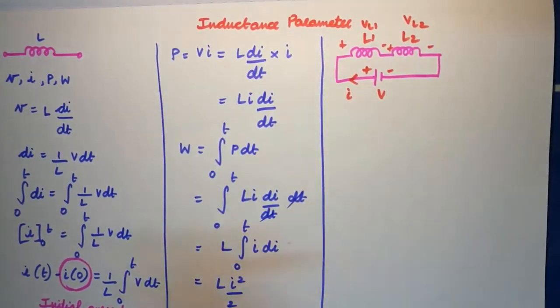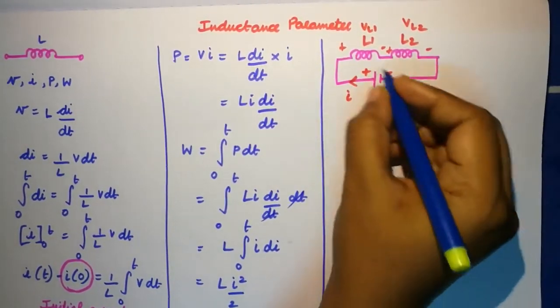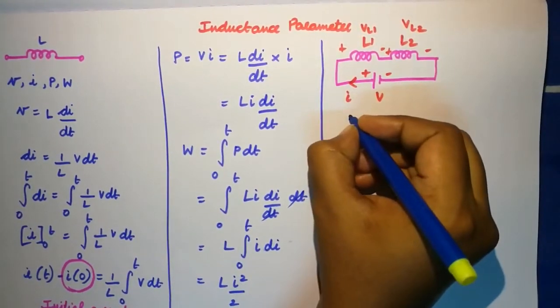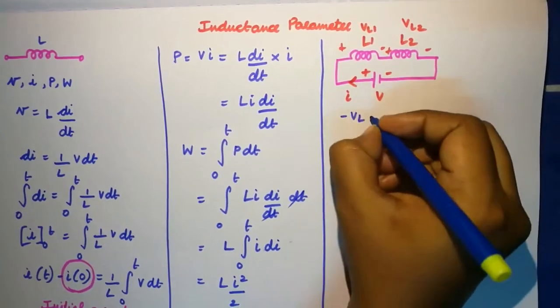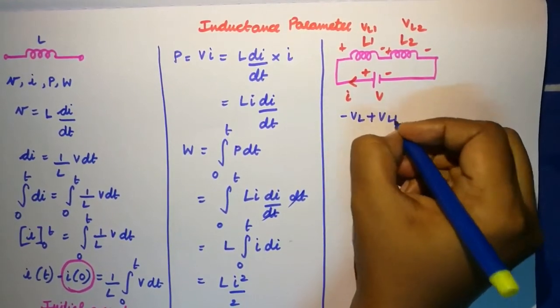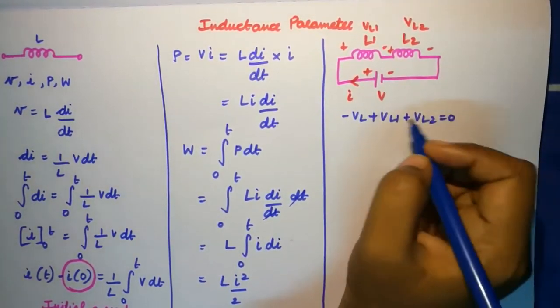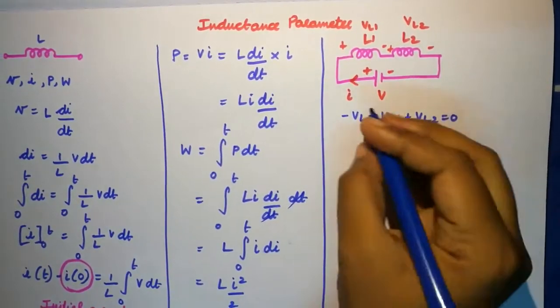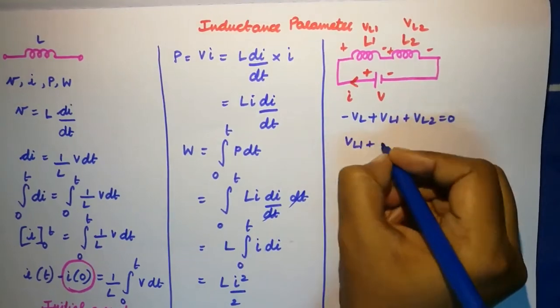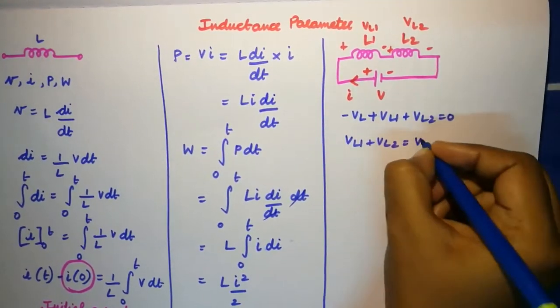So when you apply KVL here it is going to be minus vL plus vL1 plus vL2 is equal to zero. The algebraic sum of the voltages in the closed path is zero, so you would get vL1 plus vL2 is vL.